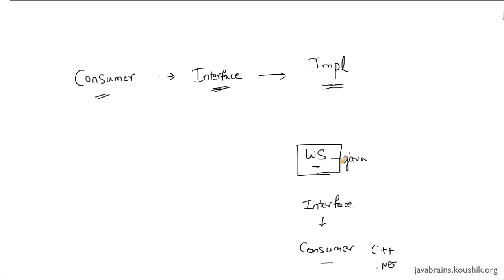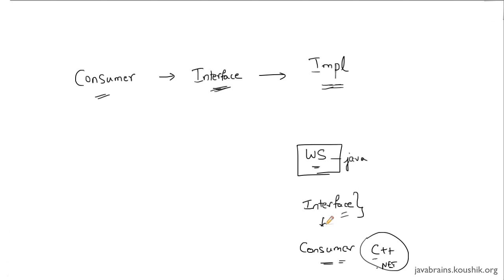Let's say you have a Java web service. You might want to give some kind of interface that a consumer, irrespective of the technology, can actually consume. If the consumer is a C++ application and I give the C++ developer a Java interface, that would probably not work. So the contract that I'm going to share with a web service consumer has to be technology independent — something that any application, any technology can understand.